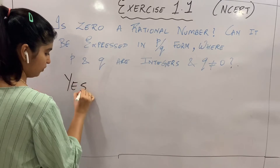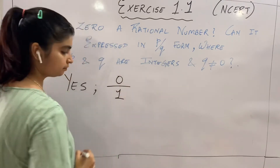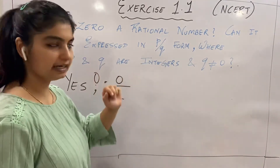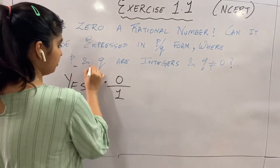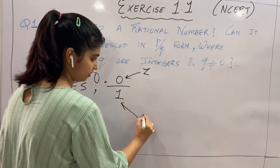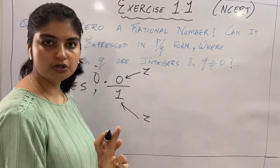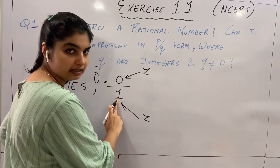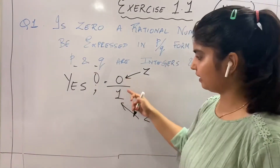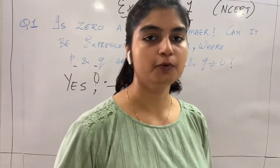Yes, zero is a rational number. We can write zero as 0 by 1, which equals zero itself. Checking the conditions: p = 0 is an integer, q = 1 is an integer, and q is not equal to zero. Both conditions are satisfied, so zero can be expressed in p by q form. Therefore, yes, zero is a rational number.